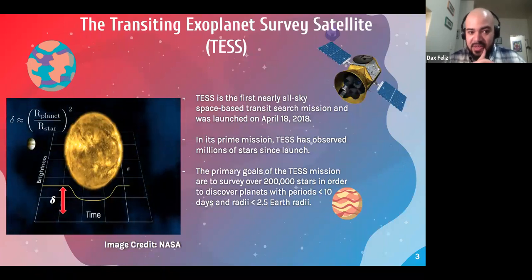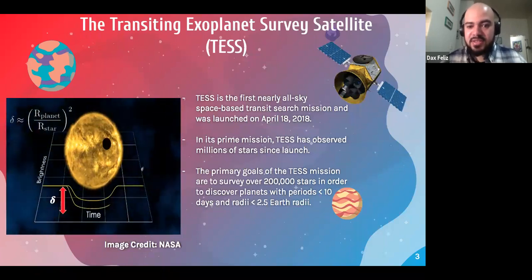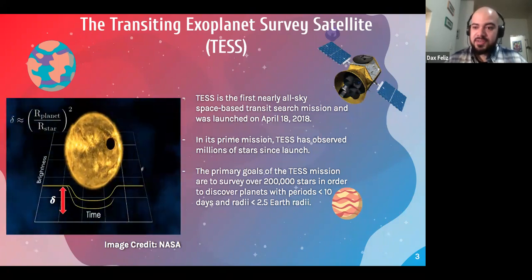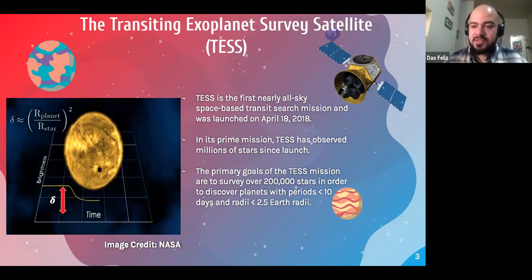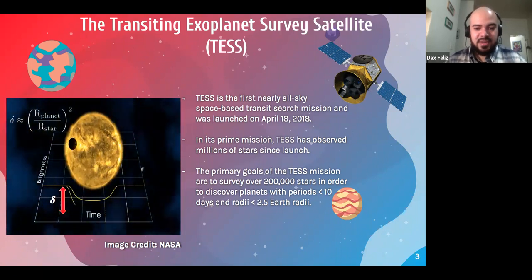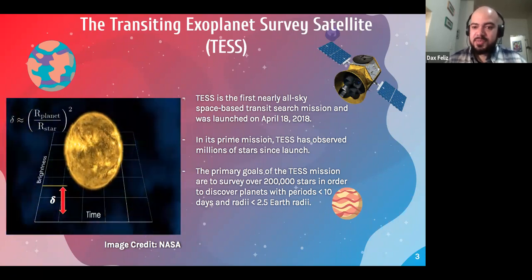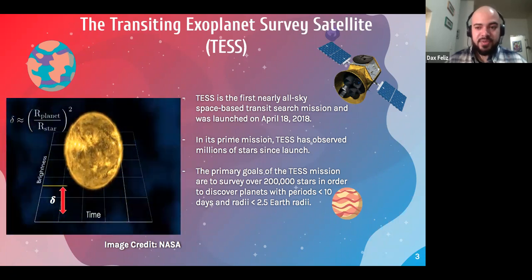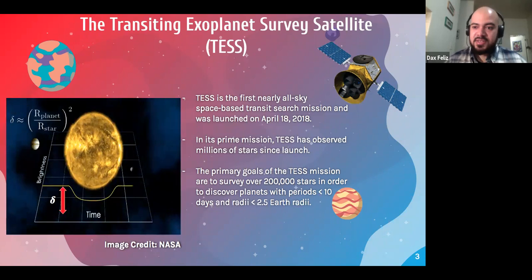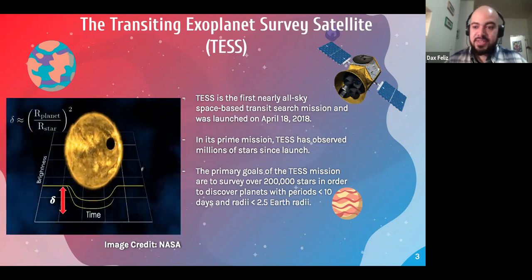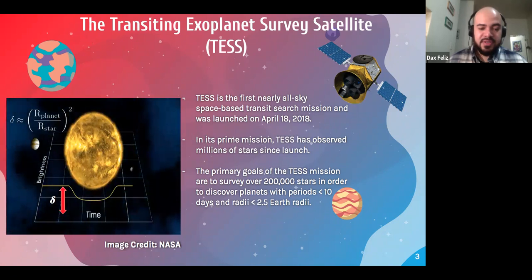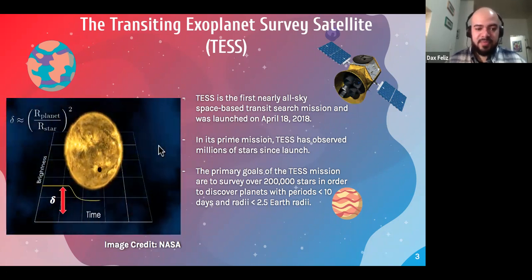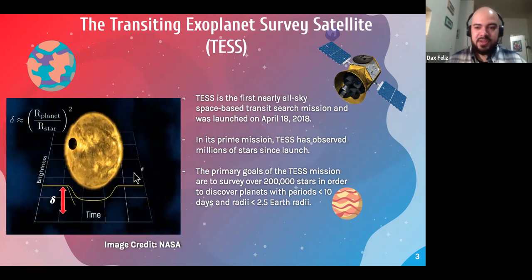So before I begin, I thought I'd talk a little bit about what the TESS mission is. So this was the first nearly all-sky space-based transit search mission, which was launched in spring 2018. And its prime mission TESS has observed millions of stars since it was launched. It's now in its third year of operation. And what TESS is designed to look for is transit events of planets passing in front of their stars, like in this diagram here. Where you observe the brightness over time, and you're looking for these eclipses that occur periodically.